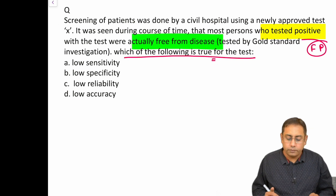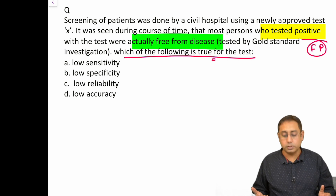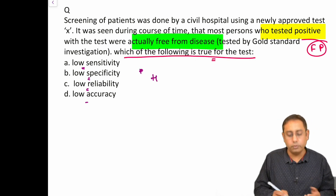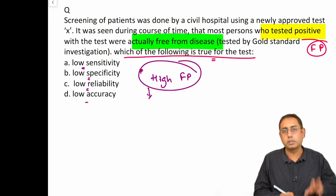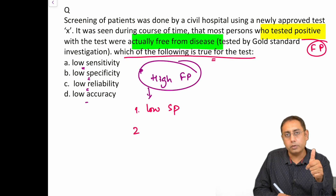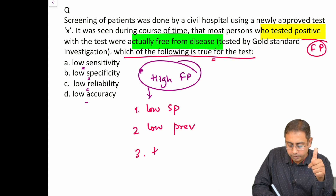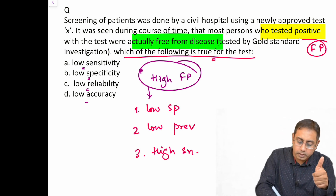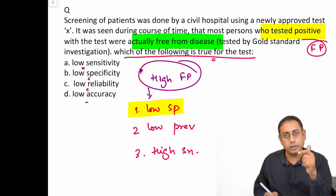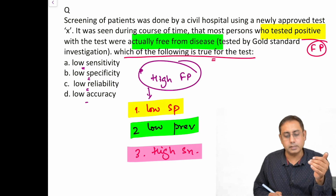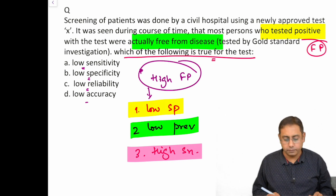Coming back to MCQ #1: most patients who tested positive were actually free from disease — this is a high false positive scenario. A golden MCQ rule: high false positive can be due to three things — low specificity (first choice), low prevalence (second choice), or high sensitivity (third choice). Mark low specificity first; if not in the options, mark low prevalence; if not, mark high sensitivity. The answer here is low specificity.